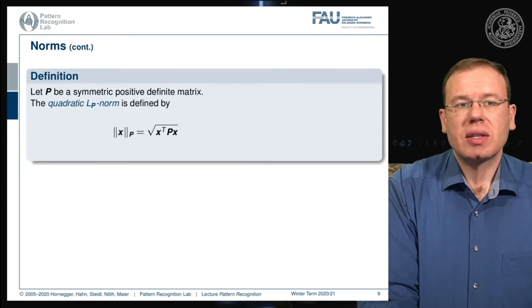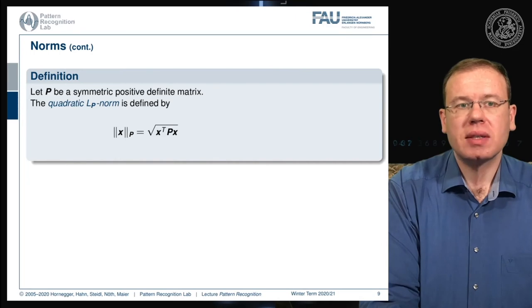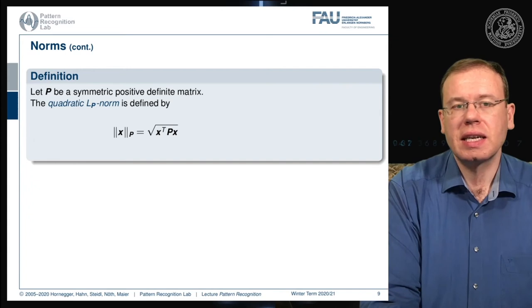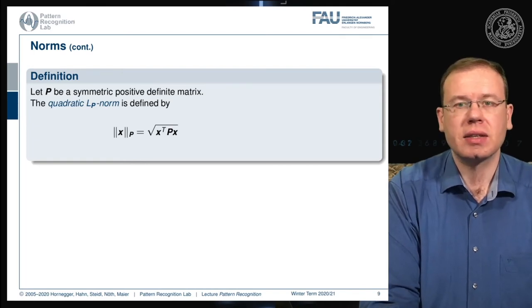There are also LP norms, where P is now a capital bold letter—so this is a matrix. If it's a symmetric positive definite matrix, then the quadratic LP norm is given as x transpose times P times x—essentially a weighted distance to itself, weighted by P, and then you take the square root.